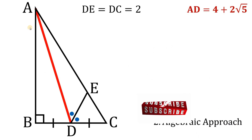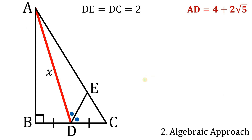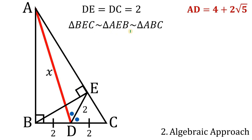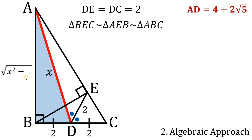Now let's use the algebra approach. Let AD equal x, BD equals 2, and DC equals 2. Connecting point B to E creates a right triangle, and triangle BEC is similar to triangle AEB, which is also similar to the full right triangle ABC. Using right triangle BAD and the Pythagorean theorem, AB equals the square root of x squared minus 4.